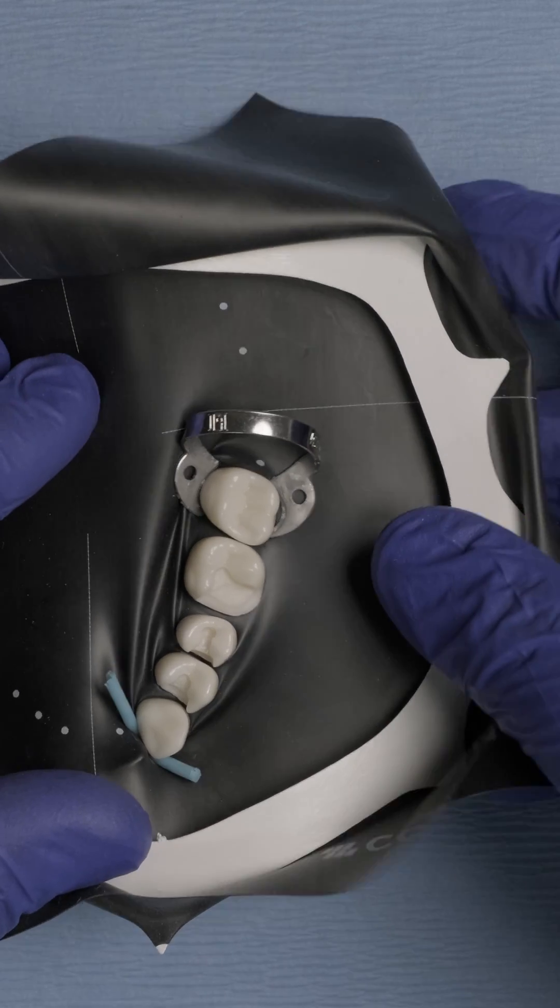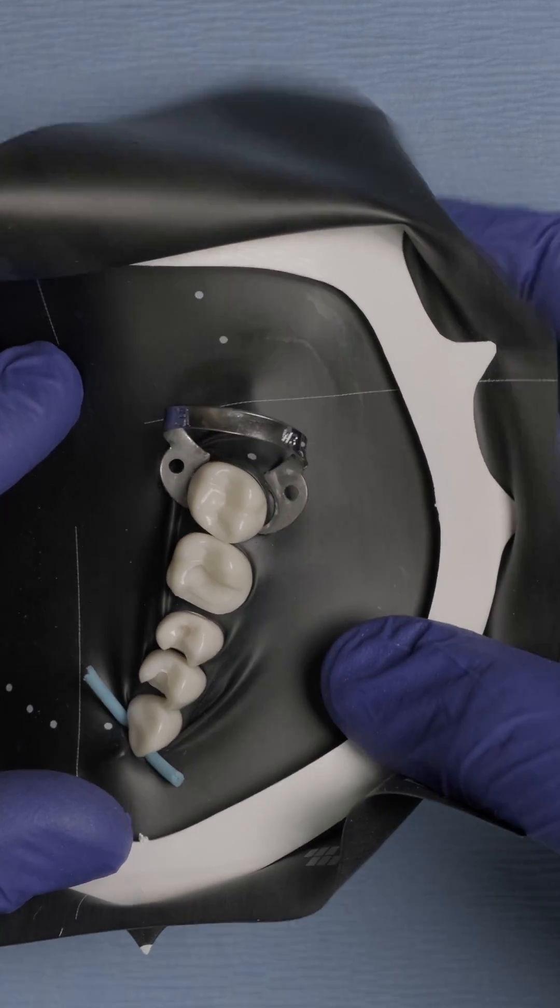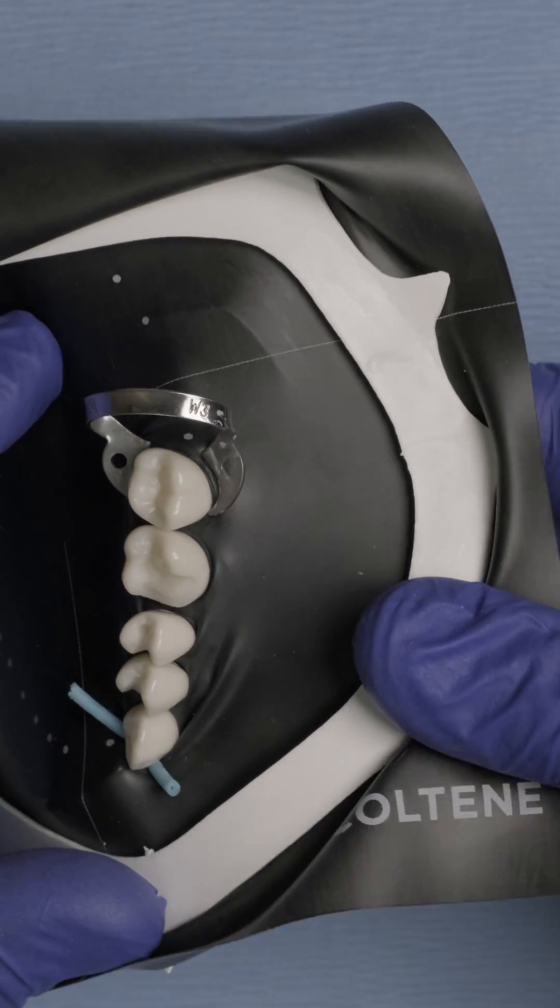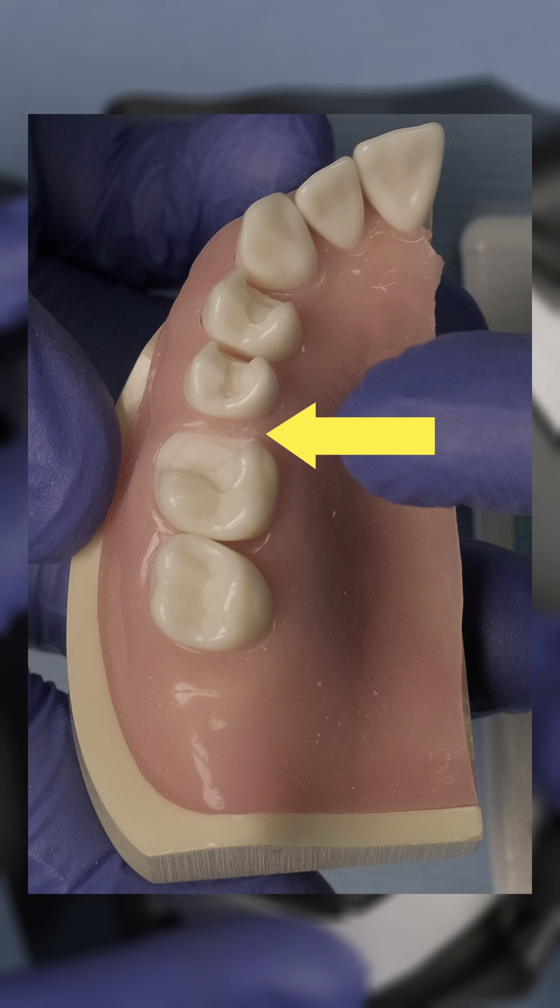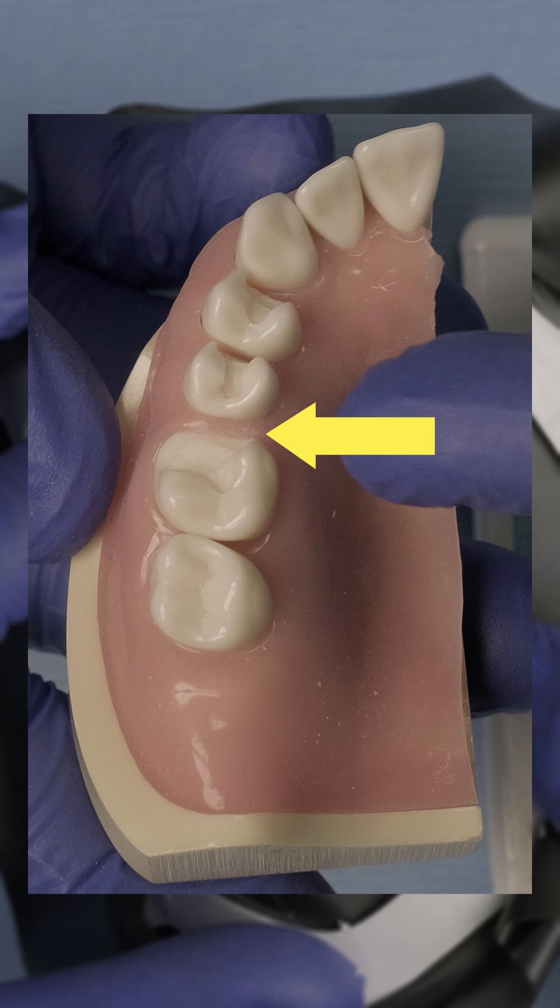Another thing that I want to show you is the retraction potential of the latex rubber dam, this latex high-slate black rubber dam. Remember when I showed you the model initially, the mesial margin of this first molar was completely covered by tissue.